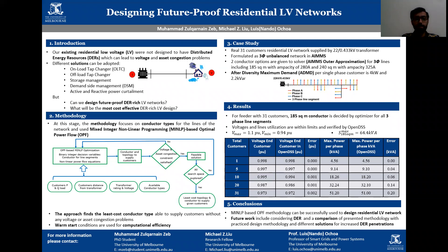Our existing residential low-voltage networks were not designed to accommodate distributed energy resources like photovoltaics, electric vehicles, or residential batteries. So with the higher penetration of these DERs, our networks are facing voltage and asset congestion problems.